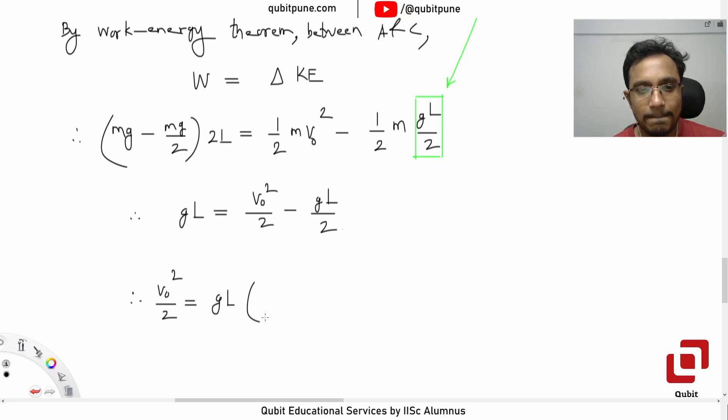Therefore V_0 squared by two is equal to GL plus GL by two. Two plus... Oh, wait a second. Wait a second. I have forgotten to include this two. Sorry. My bad. This should be four. Correct. Should be four.